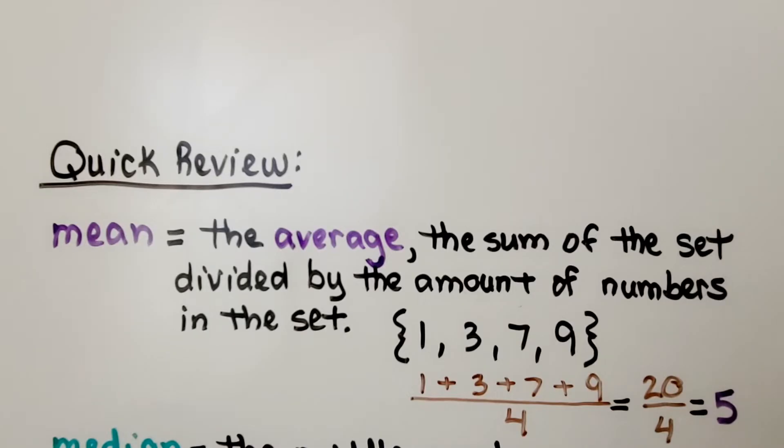Let's do a quick review. The mean is the average. It's the sum of the set divided by the amount of numbers in the set. If our set of data values is 1, 3, 7, and 9, we add them and get 20. There are 4 numbers in the set, so we divide by 4. The average is 5. The mean is 5.